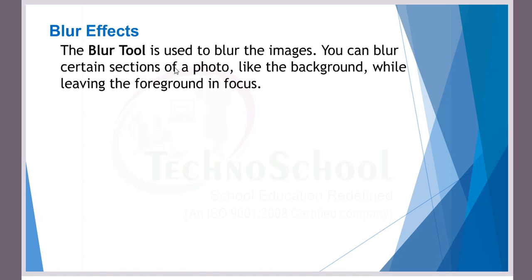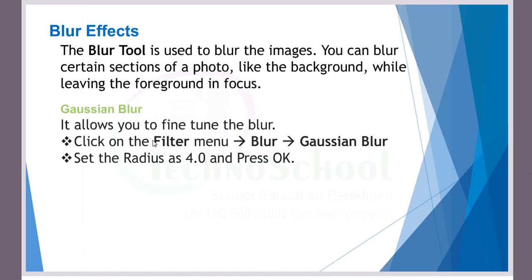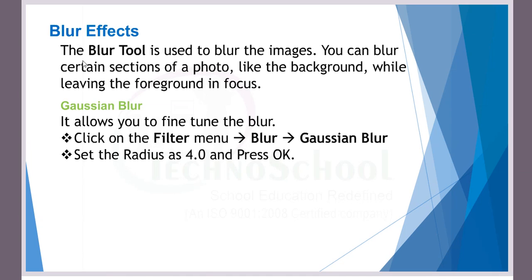The blur tool is used to blur an image. A live example: if you look at newspapers and news broadcasts, you can see this type of effect used. You can blur certain sections of a photo, like the background or foreground. There are many types of blur effects — for example, we will see Gaussian blur. During the demo I will show you more.